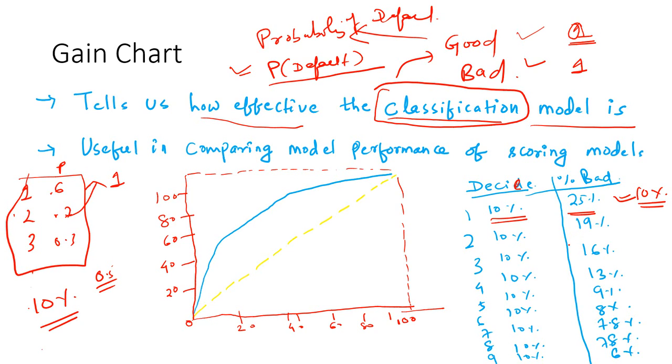When you take the cumulative of that and draw a graph, you get the gain chart. In the x-axis you take the population percentage, and in the y-axis you take the percentage of bad or percentage captured. Now it can be any event - we're taking the bad percentage here.